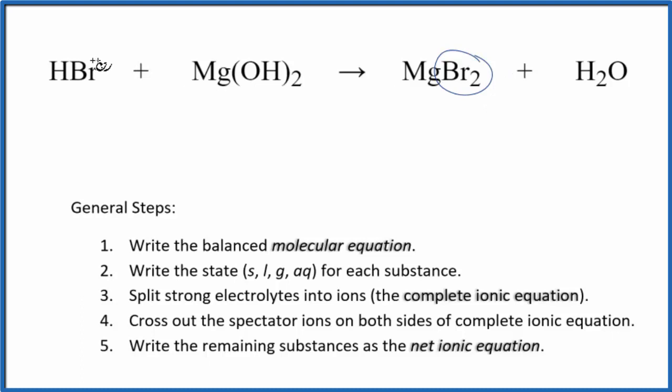There are two bromine atoms here and only one here. Let's put a two in front of the HBr. Looks like I need to put a two here. If I do that, I'll have two oxygens and two hydrogens plus two hydrogens. So four hydrogens here, two times two, four. That's the balanced molecular equation.